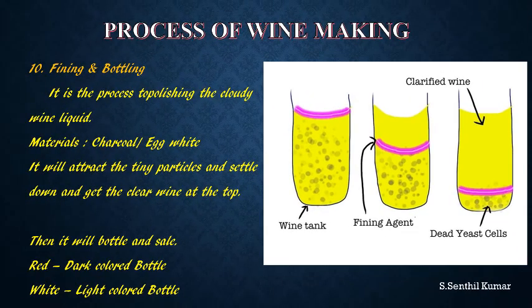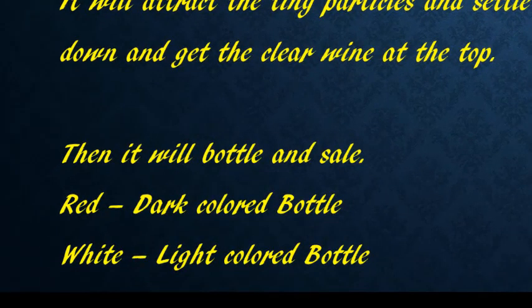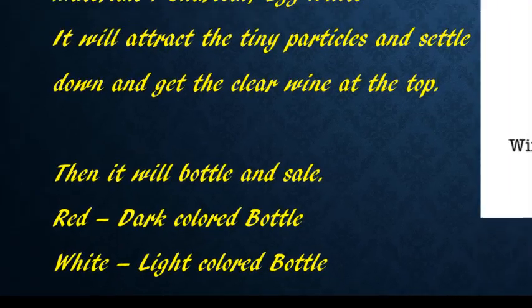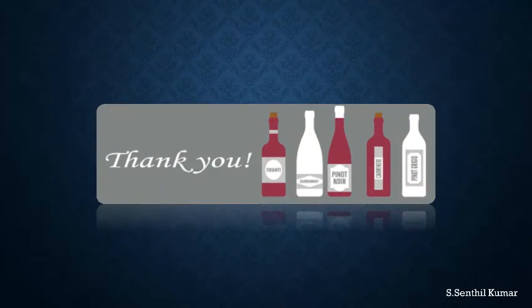The wine is then bottled and sent for sale. During the bottling process, red wines are bottled in dark-colored bottles and white wines are stored in light-colored bottles. These are the steps involved in wine production. If you have any queries, you can ask. Thank you.